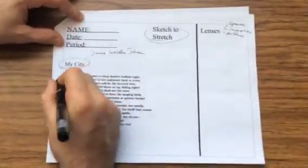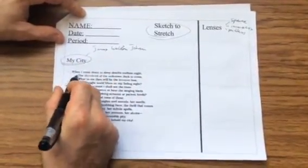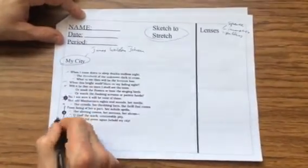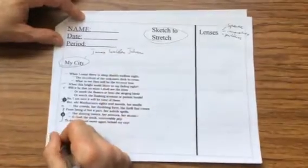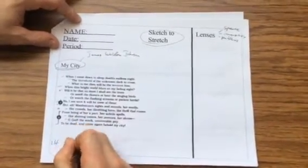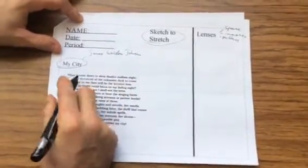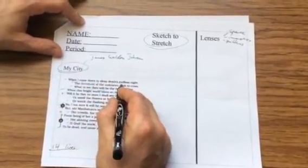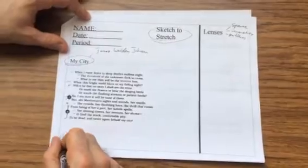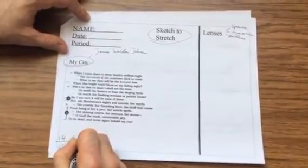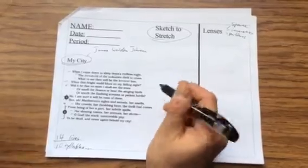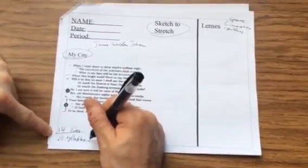The first reason that I know it's a sonnet is when I count the lines: 1, 2, 3, 4, 5, 6, 7, 8, 9, 10, 11, 12, 13, 14. It's got 14 lines. The other thing is if I count the syllables per line - when I come down to sleep, death's endless night - this comes to 10 syllables every single line for the most part. There's a couple of exceptions in this poem, but it's good enough to tell us it's an iambic pentameter.